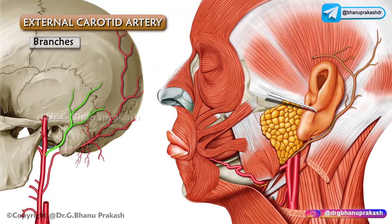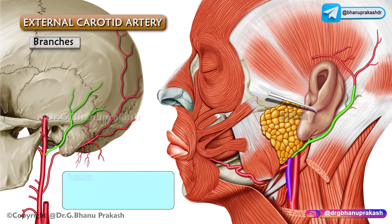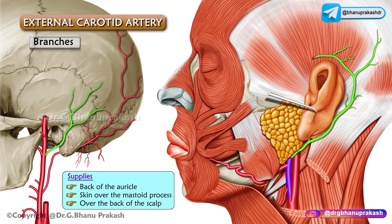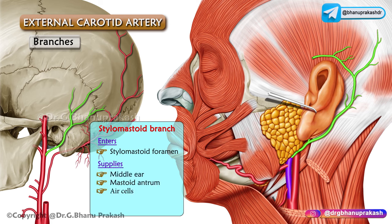The posterior auricular artery arises from the posterior aspect of the external carotid artery above the posterior belly of the digastric muscle. It runs upwards and backwards, deep to the parotid gland but superficial to the styloid process of the temporal bone, crosses the base of the mastoid process, and ascends behind the auricle. It supplies the back of the auricle, the skin over the mastoid process, and the back of the scalp. The stylomastoid branch enters the stylomastoid foramen and supplies the middle ear, mastoid antrum, air cells, semicircular canals, and the facial nerve in the middle ear.